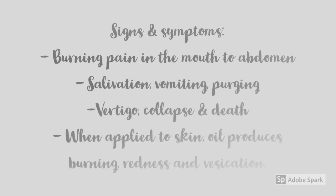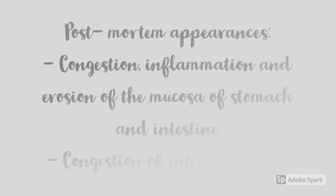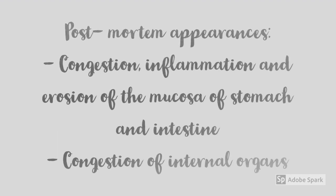The signs and symptoms of croton poisoning — just like any irritant poison — include burning pain in the mouth extending to the abdomen, along the tract through which it has passed. Other signs and symptoms include salivation, vomiting, purging, vertigo, collapse, and death. When the oil is applied to skin, it produces burning, redness, and vesication.